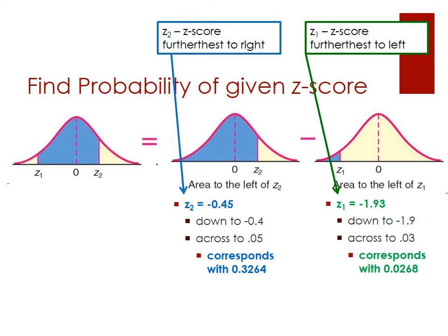Z2 is always the Z-score furthest to the right — this is why it's important to graph. In this case, Z2 is negative 0.45. Going down to negative 0.4 and across to 0.05 gives a corresponding probability of 0.3264. For Z1, which is always the score furthest to the left — here negative 1.93 — going down to negative 1.9 and across to 0.03 gives a probability of 0.0268. Pause the video and locate both of these probability values in your Z distribution table to confirm.